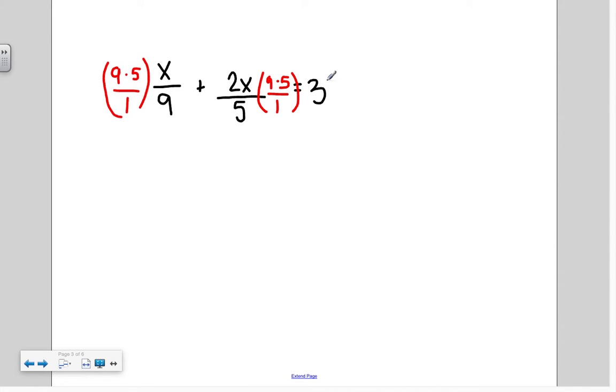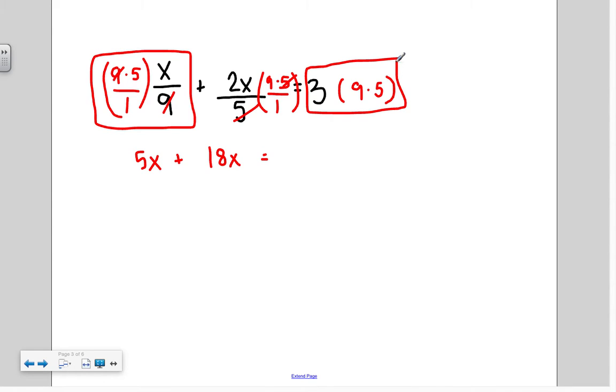Making sure that I also do it to the 3 on the other side. So looking at my first set here, I have 9 on both the top and the bottom. So this becomes 5x over 1, or just 5x. And then I have 5 on the top and the bottom. So I have 2x times 9, which is going to give me 18x. And then I have my last term on this side. 3 times 9 times 5, and that's going to give me 135.